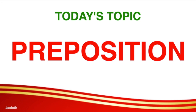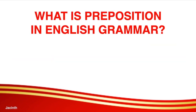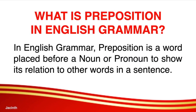So what is preposition in English grammar? In English grammar, preposition is a word placed before a noun or a pronoun to show its relation to other words in a sentence. Let us repeat that: in English grammar, preposition is a word placed before a noun or pronoun to show its relation to other words in a sentence.